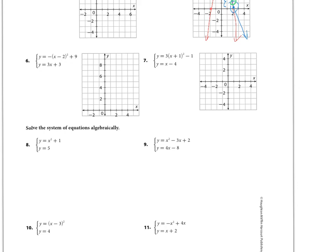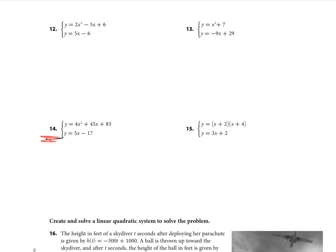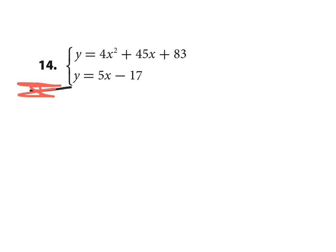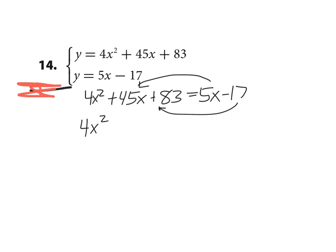The next one says solve the systems of equations algebraically. So let's look at doing this one algebraically. First, you're going to set them equal: 4x² + 45x + 83 equals 5x - 17. And then, depending on your methodology, again what you could do, since you don't show work on the homework, just use the calculator and do your graphing and find the intersection. I'm going to do it algebraically. So I'm going to move the 5x over and I'm going to move the -17 over. So this now becomes 4x² plus 40x, because you subtract 5x, and then you add 17, so that would be plus 100 equals zero.